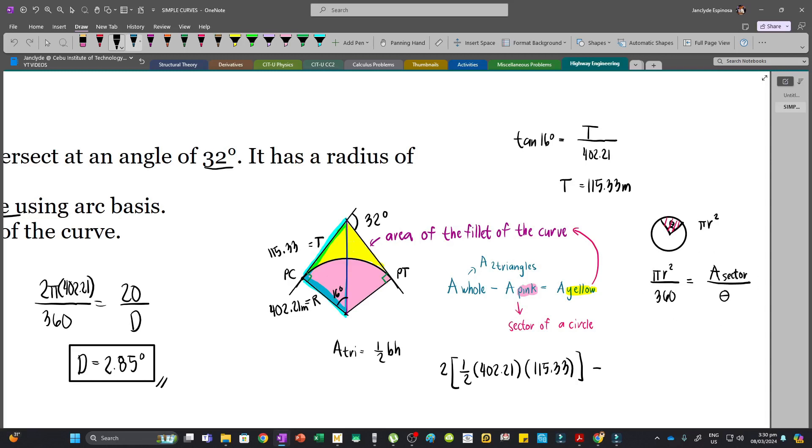This is what we're going to use. So since we know the radius, we have π times 402.21 squared divided by 360 equals the area in pink or the area of the sector of a circle divided by the central angle. Now this is also 16 degrees, because this total angle is just equal to i, so this is 32 degrees. So we have 32 here.